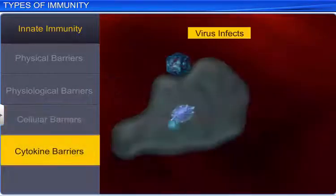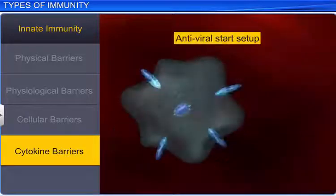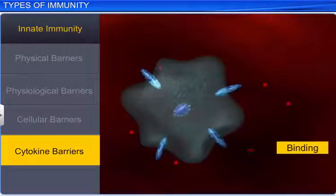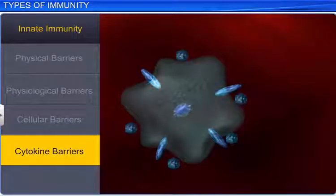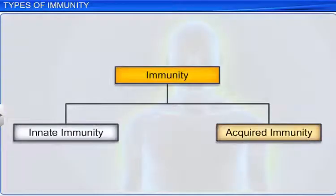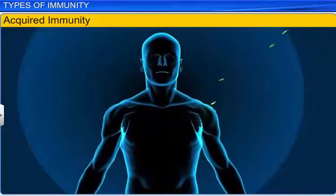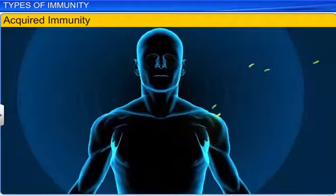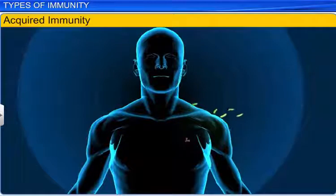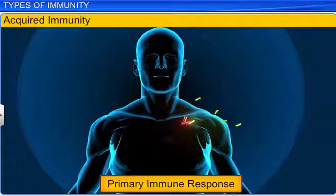Some virus-infected cells release proteins called interferons that prevent the spread of infection in the body, thereby acting as cytokine barriers. On the other hand, acquired immunity is pathogen-specific. It depends on the body's memory. For example, when a body encounters a bacterium for the first time, it produces a low-intensity response called a primary immune response, and produces memory cells.